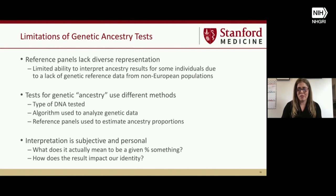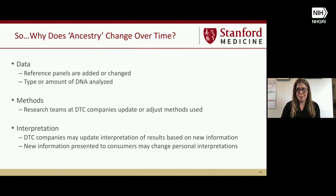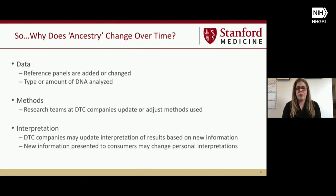So why does ancestry change over time? There are three main reasons. One is the data — reference panels can be added, changed, or updated. Another is the type or amount of DNA being analyzed, and sometimes companies change methods, leading to new estimates. And then there's interpretation — companies might update their interpretation based on new information, and your own personal interpretations might also change based on new data you've been presented with.